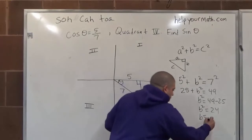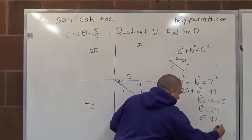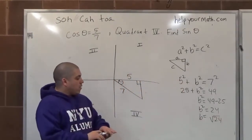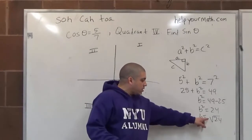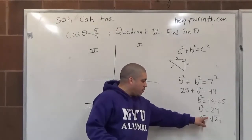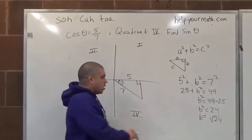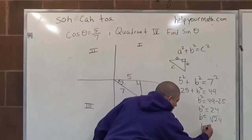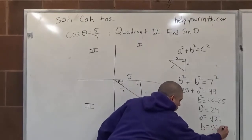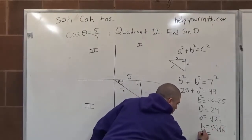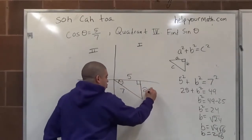When I take the square root of b, keep in mind, whenever you're taking the square root, you have to put plus or minus, but we're only going to put plus because distances can only be positive. So b equals root 4 times root 6, which equals 2 root 6. So now we know this side is 2 root 6.